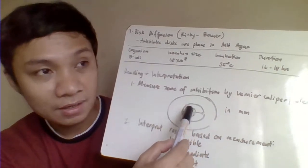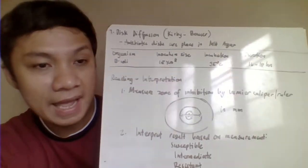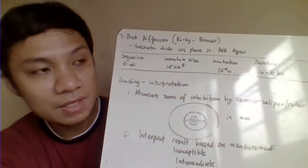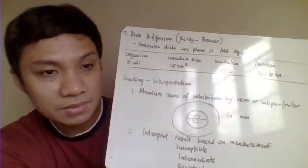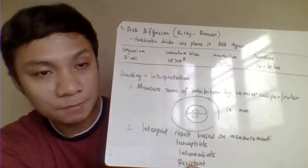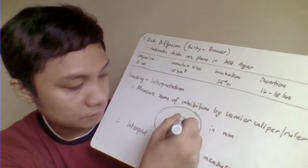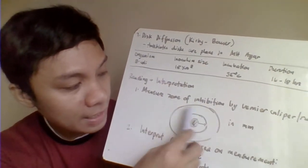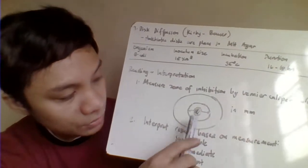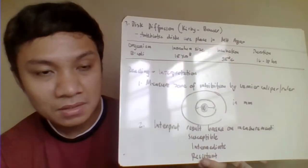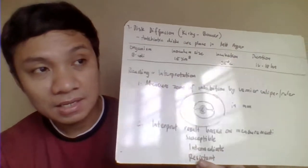After even streaking, place the antibiotic discs on the plate. For example, with E. coli, incubate at 35 degrees Celsius. The inoculum size is 1.5 × 10⁸ CFU/mL for disk diffusion, incubated for 16 to 18 hours. Then observe the zone of inhibition — the clear zone surrounding the antibiotic disc. Measure the diameter of that zone in millimeters using a ruler or vernier caliper, measuring across the full diameter.